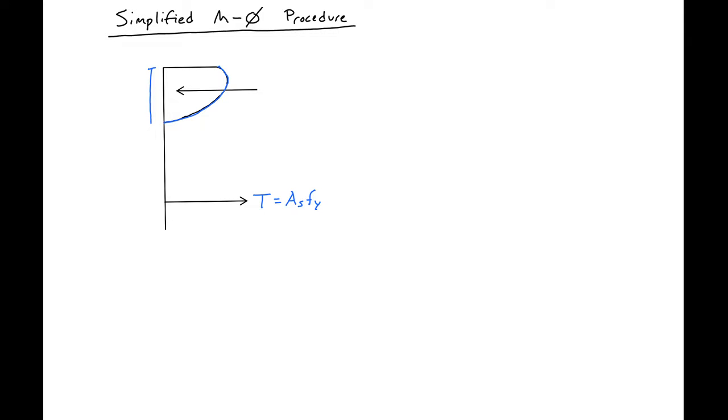The depth of our neutral axis will be Kd. The height of our compression block we'll call K3 times F'c.